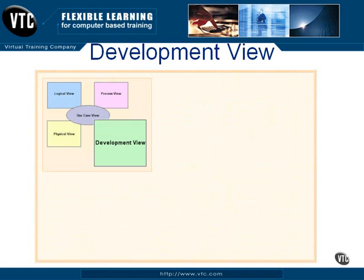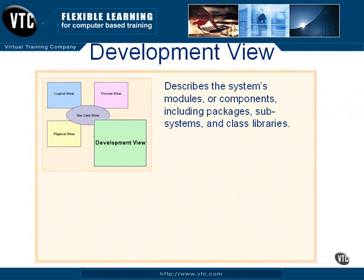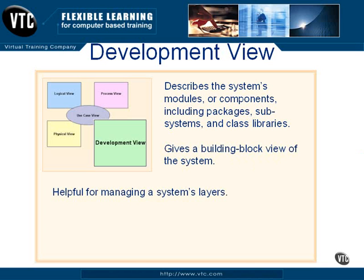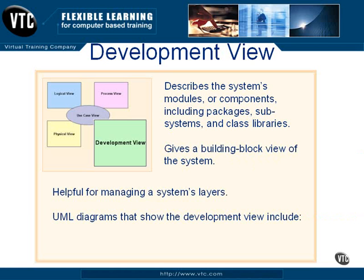The development view describes the system's modules or components, including packages, subsystems, and class libraries. This view gives what you might call a building block view of the system because of the way it looks at modules, and the development view is very helpful in managing a system's layers. UML diagrams that show the development view include component diagrams and also package diagrams.